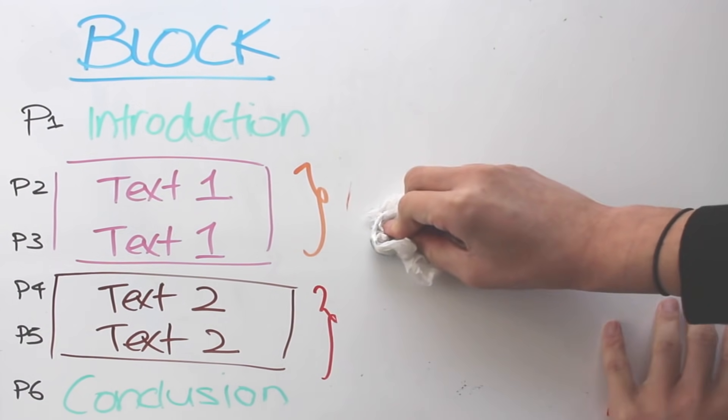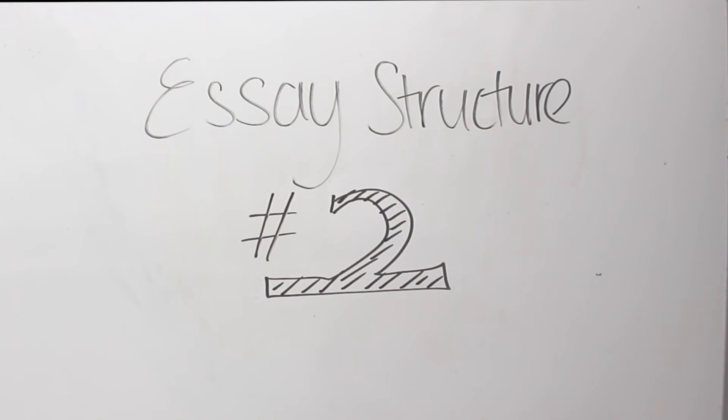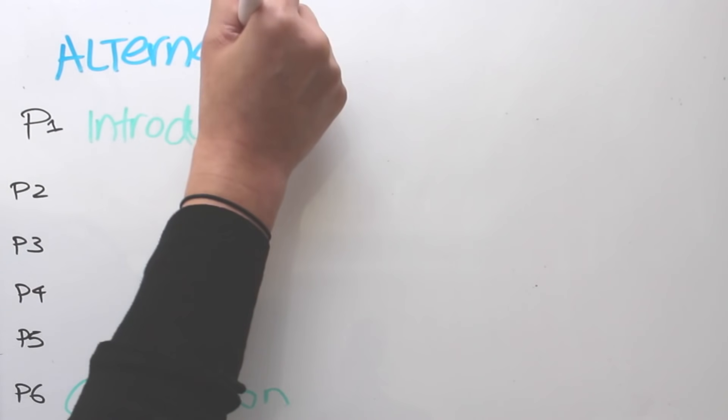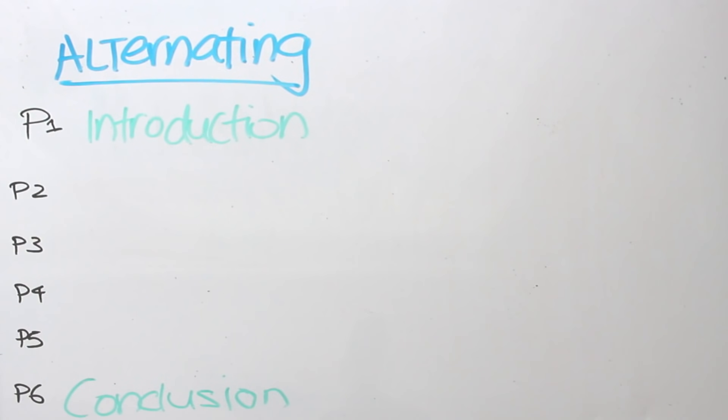Now let's have a look at our second essay structure, which will be an alternating essay structure. I've left introduction and conclusion behind because they still exist in all of the three different types of essay structures.